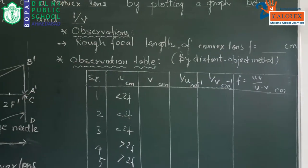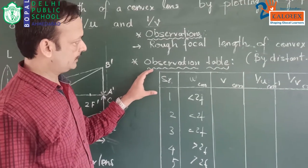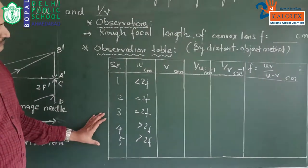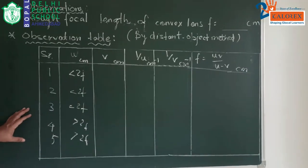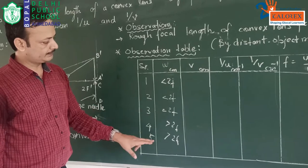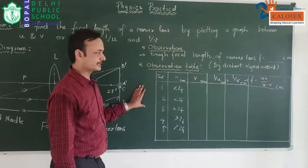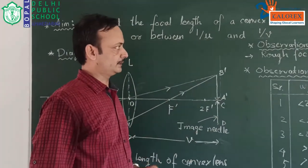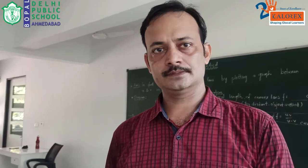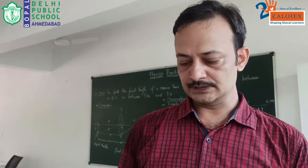After finding the rough focal length we will proceed into the experiment and find our observations. I will feed the observation data for different positions. There are 5 different positions where I am going to place the object needle — 2 positions beyond 2F, 1 at 2F, and the remaining 2 below 2F. Now we are going to find the rough focal length using the distant object method, which will be your rough focal length.